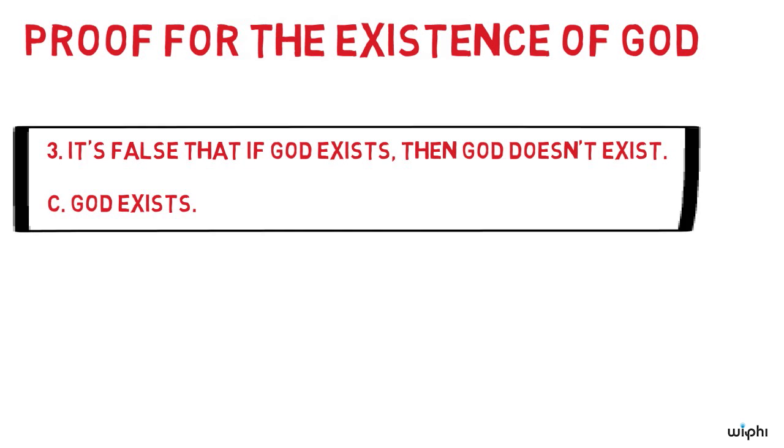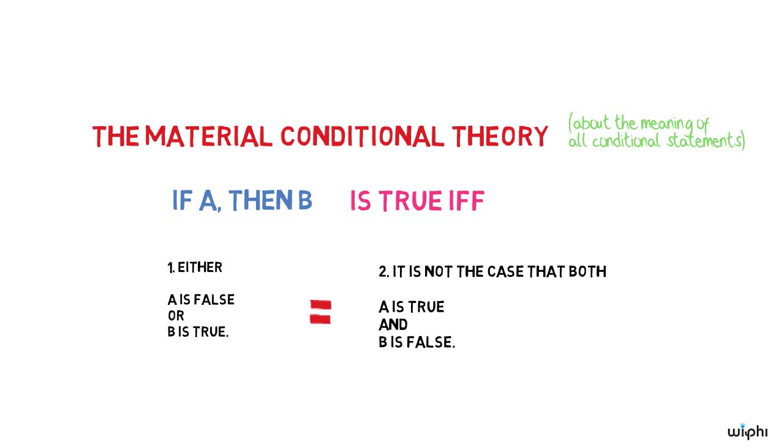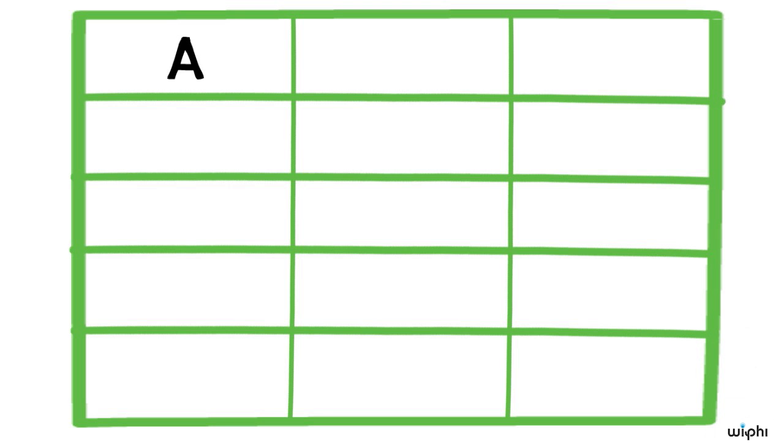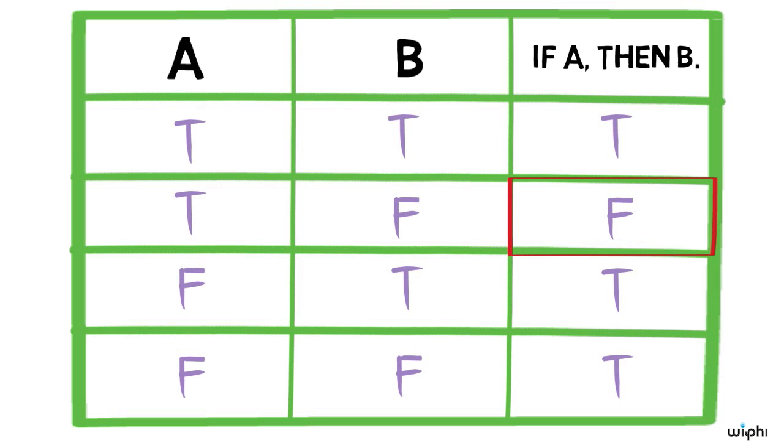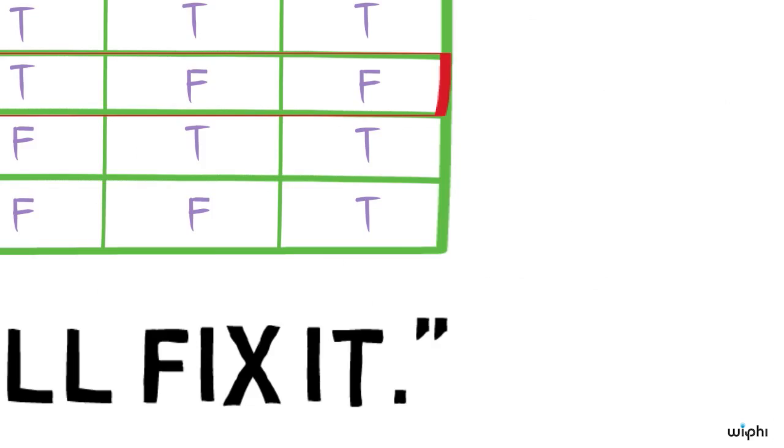This proof is valid given the material conditional theory. Here's why. According to the theory, a conditional if A then B is false only on the condition that its antecedent A is true and its consequent B is false. You can verify this by seeing that it's false only on the second line of the truth table.